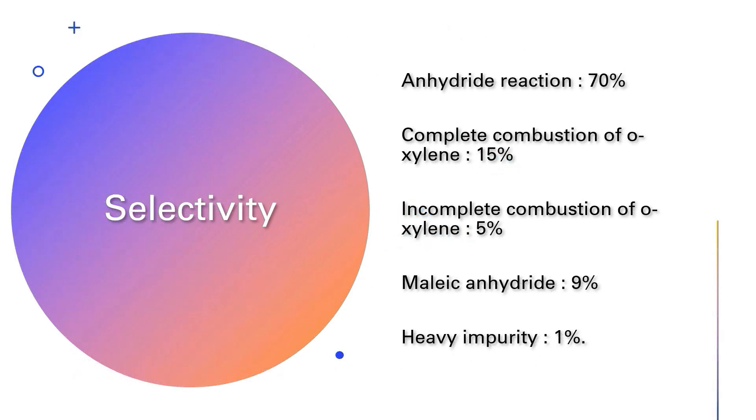The selectivity for the phthalic anhydride reaction is 70%, for the complete combustion of o-xylene is 15%, for the incomplete combustion of o-xylene is 5%, for maleic anhydride is 9%, and for the heavy impurity. The heavy impurity consumes a negligible amount of oxygen and produces a negligible amounts of light gases.